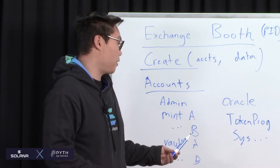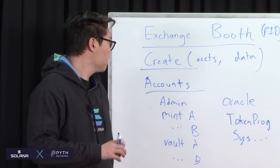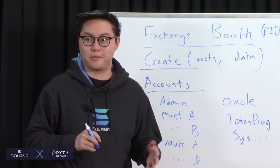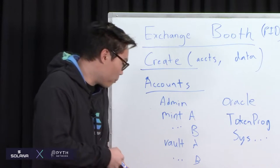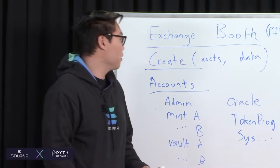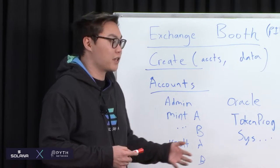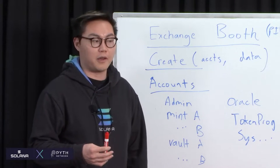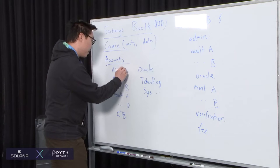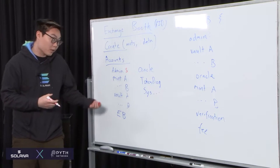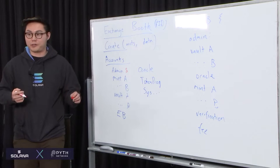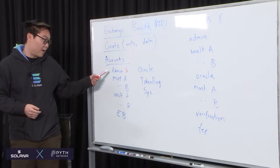I don't think there's anything explicitly necessary beyond those values. An important thing when designing this is also thinking about signers and writeability. Which of these accounts should be signers? Clearly, admin is probably the only account that explicitly must be a signer. It's possible that some other accounts are also signers if they're created on the fly. As for writeability — which accounts should be writable? The booth definitely needs to be writable, because you're populating this empty buffer with all the values in the struct.